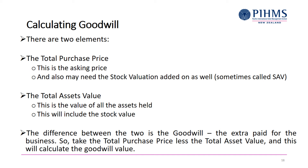On the second side, you do get some assets in return for that purchase price. So we've got our total assets — the value of all the assets that you're going to get because you buy this business. This will include stock, furniture, equipment, all that fit out — all those things like that. They're all the assets you get to keep. So the difference between the two is goodwill — the extra paid out for this business. We take the total purchase price minus the total asset value, and this will calculate the goodwill value.